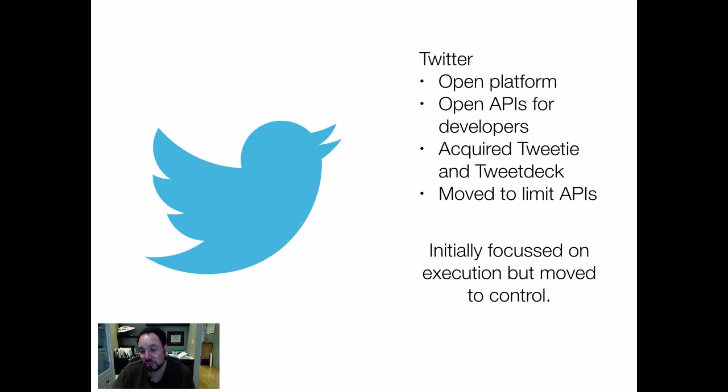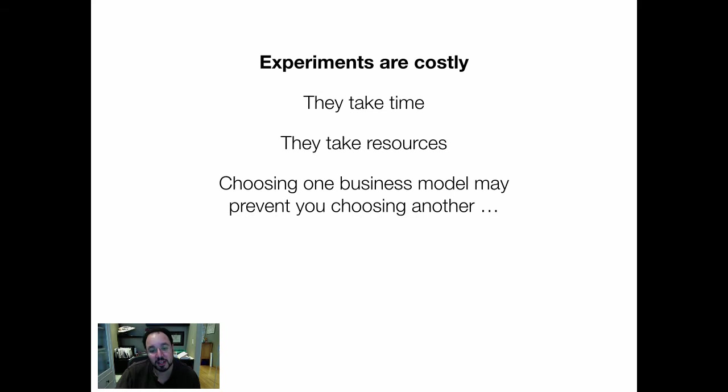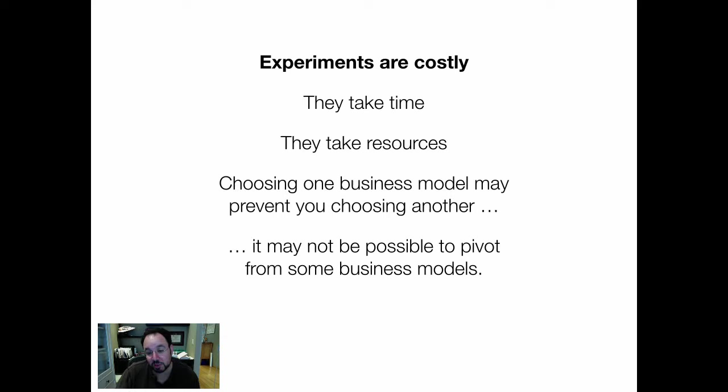There were at least concerns that Twitter might not be successful if another platform — and it was experimented with app.net, a paid model without these controls — was successful. Twitter is still carrying on, though it's yet to earn money. Experiments are costly, which you have to take into account. They take time, they take resources. Choosing one business model may prevent you from choosing another, as the Twitter example hints at — it may not be possible to pivot from some business models.